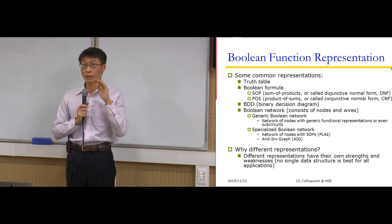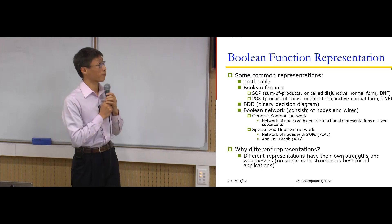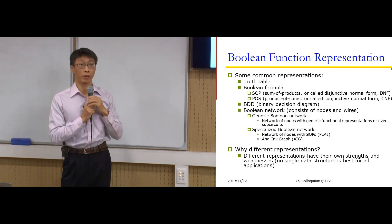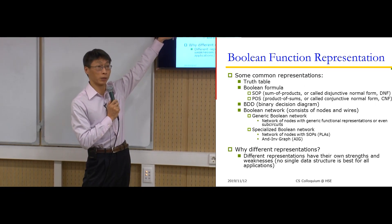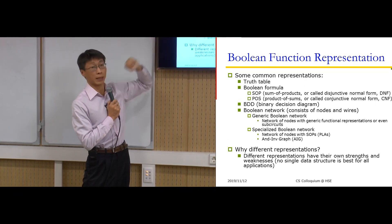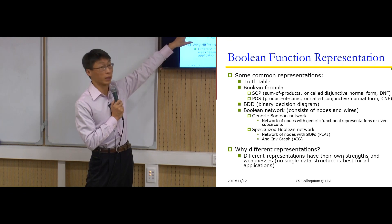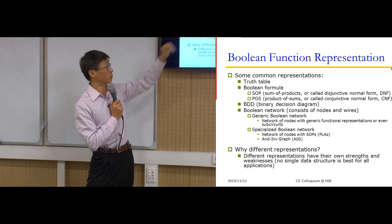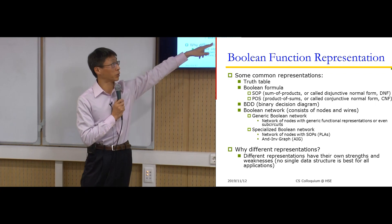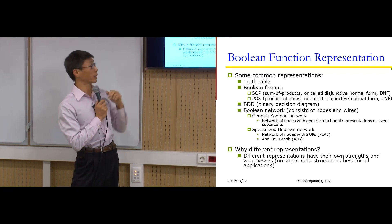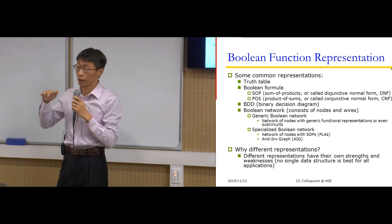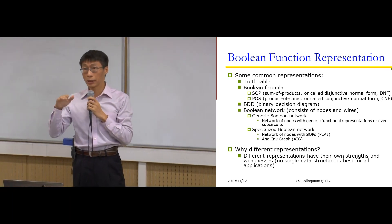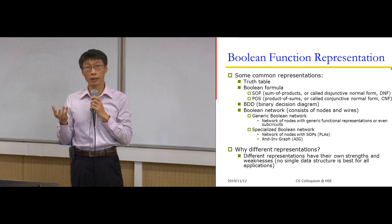Let me quickly go through some of the data structures. Truth table is a representation as mentioned. Boolean formula can be sum-of-product or product-of-sum. BDD as mentioned. There is also Boolean network as a representation of Boolean function. AIG is a specialized Boolean network. Why do we need different data types? Because different data types have different scalability or capability.